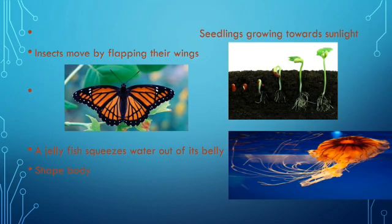Here are some pictures showing how movement works. Seedlings grow towards sunlight — we have experimented with this: when sunlight and water needs are met, seedlings grow through their growing stages. Insects move by flapping their wings; the wings are flapped and we can see what parts they use for movement.